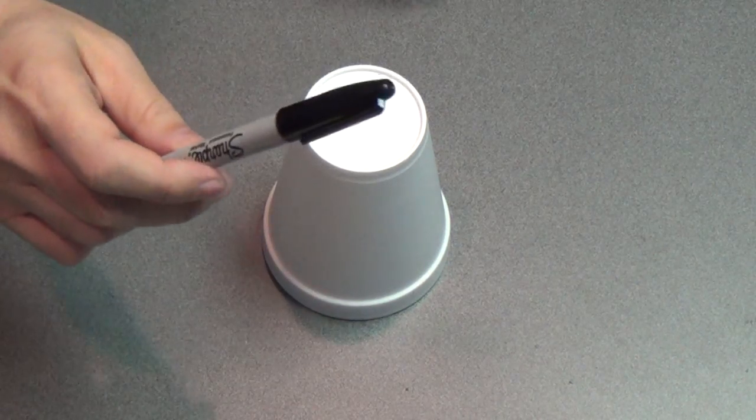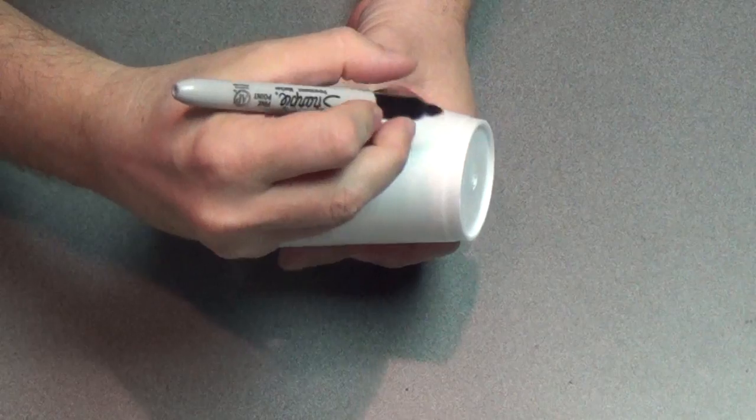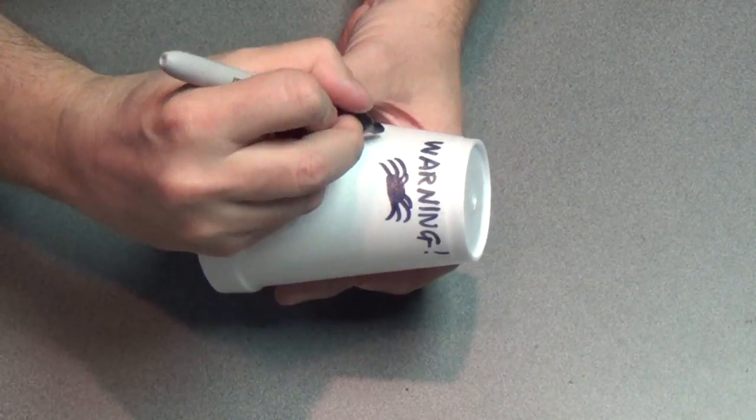So for the prank all we need is a styrofoam cup and a sharpie. And we're just going to write a message on the cup and the message is going to be, warning, huge aggressive spider under the cup.